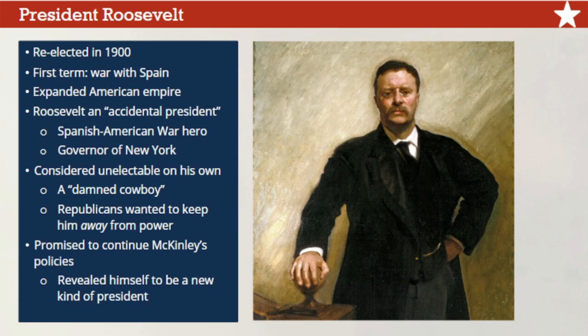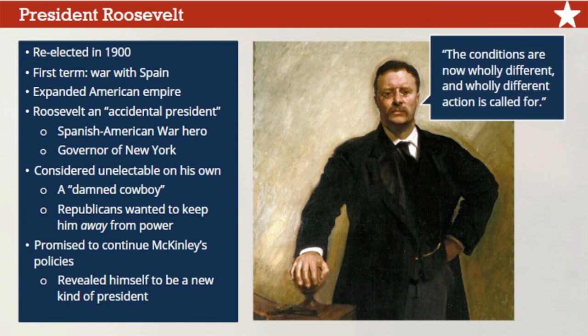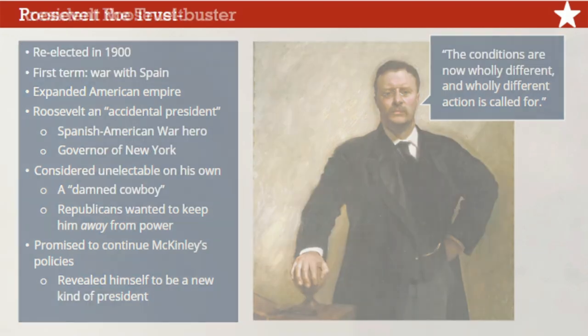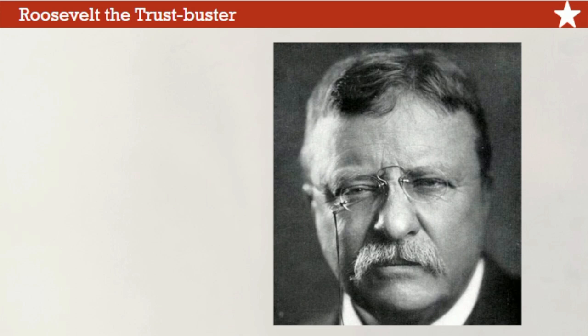He promised to keep McKinley's cabinet and continue the former president's policies. But Roosevelt would soon reveal himself to be a new kind of president — an active, energetic leader determined to use government power to achieve progressive goals. In one of his first addresses to Congress, Roosevelt explained that the Constitution as written did not address many of the problems facing modern Americans: 'The conditions are now wholly different and wholly different action is called for.'